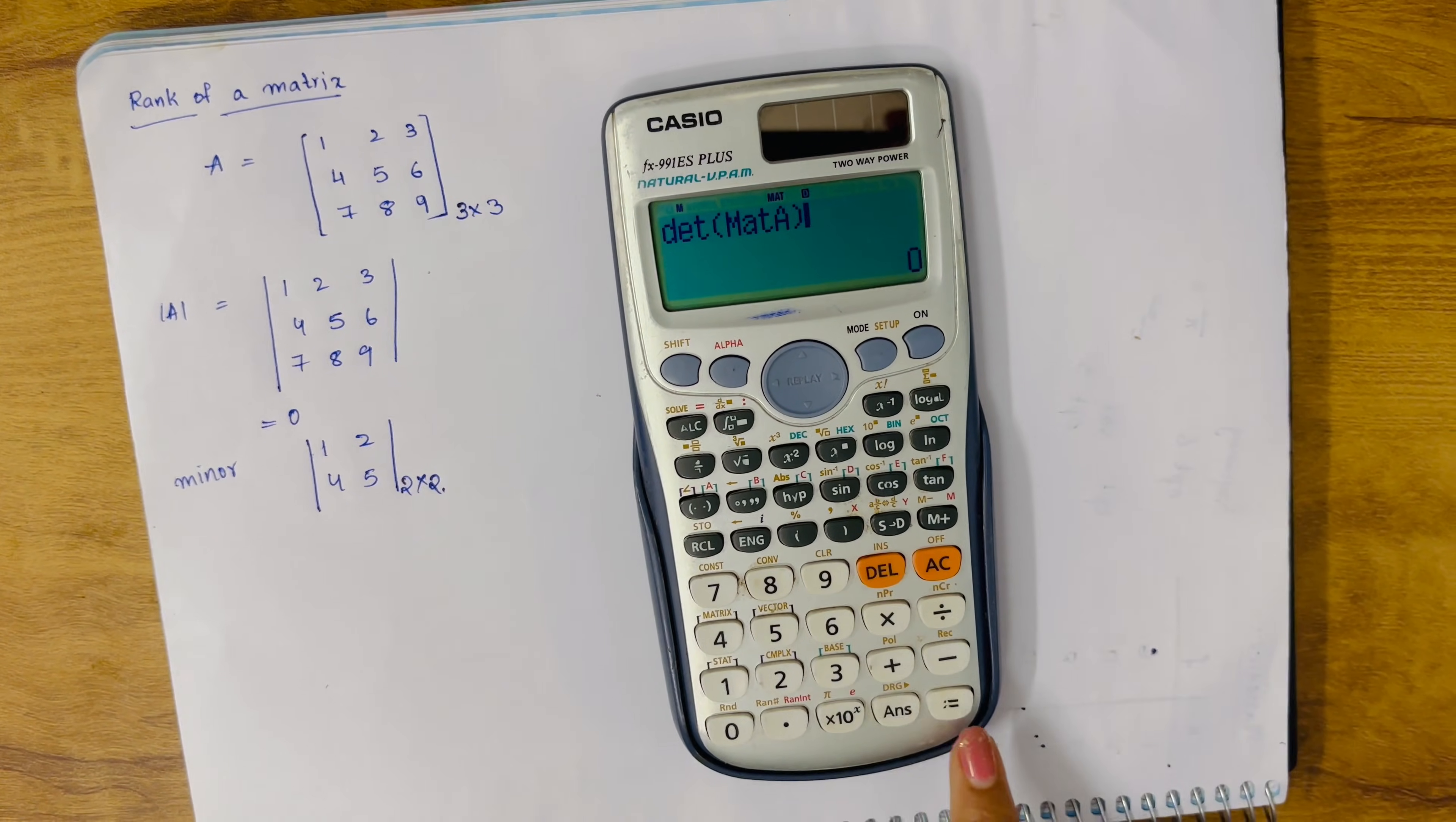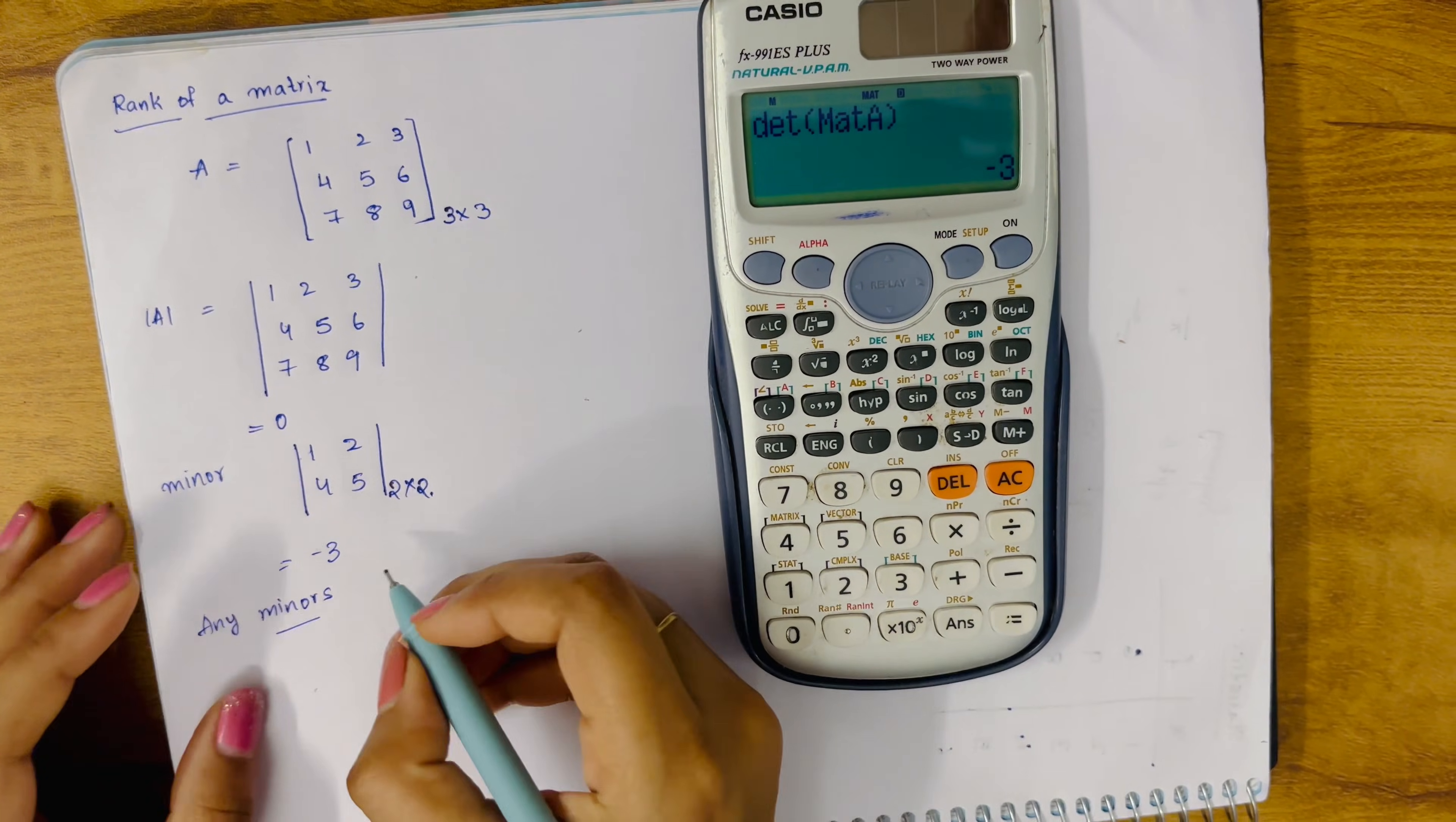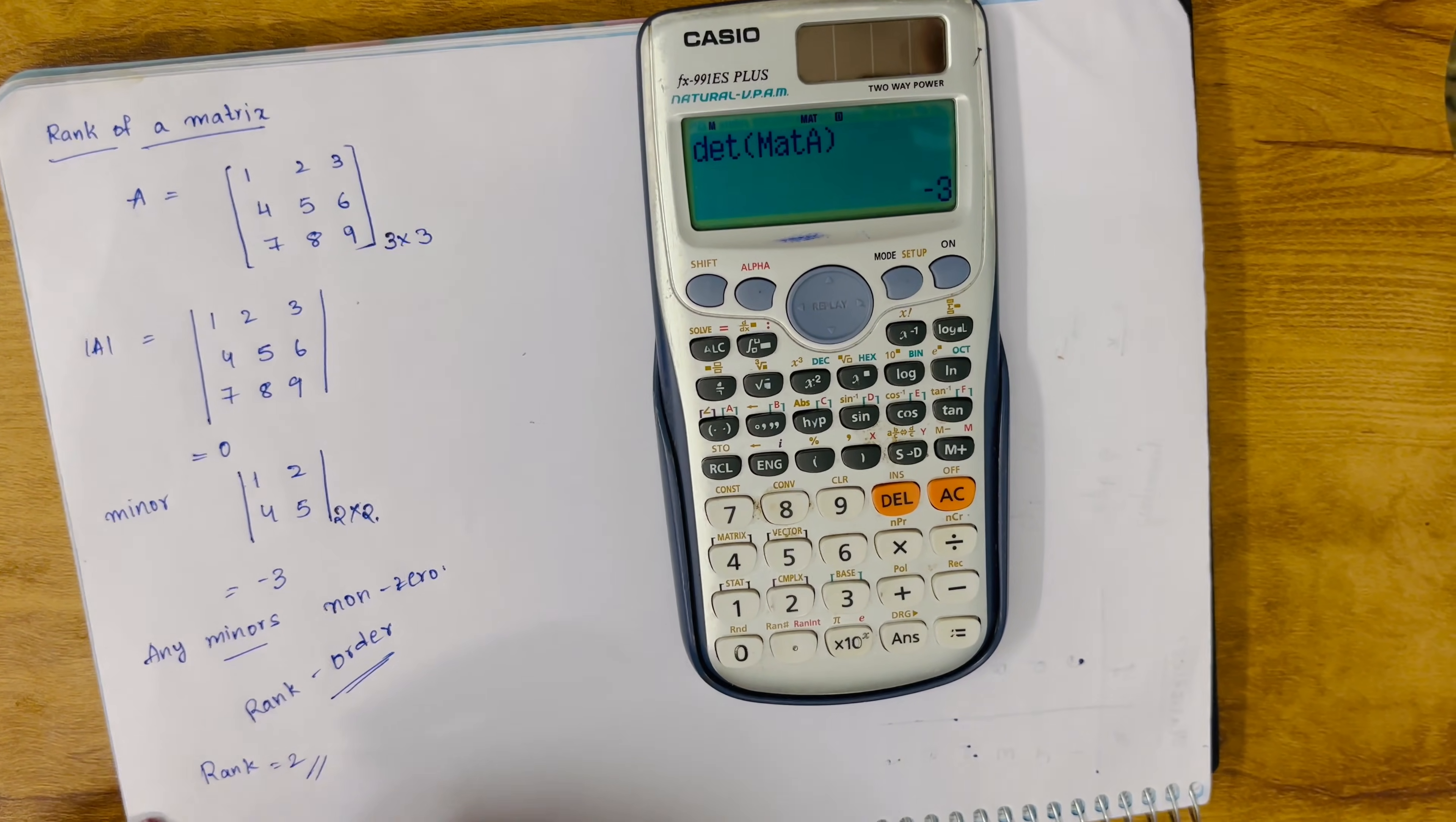Close the bracket. We got minus 3. So it is minus 3. Any one of the minors we are selecting, whatever det we are getting, that should be non-zero. Then the rank will be the order of that matrix. So order is 2. The rank of this particular matrix is 2. That is how you find the rank.